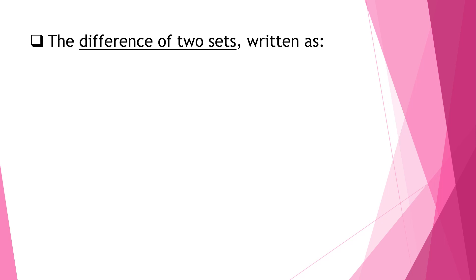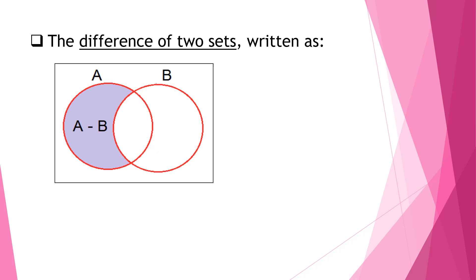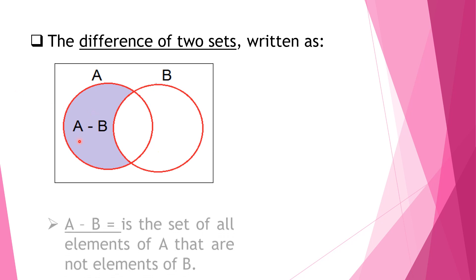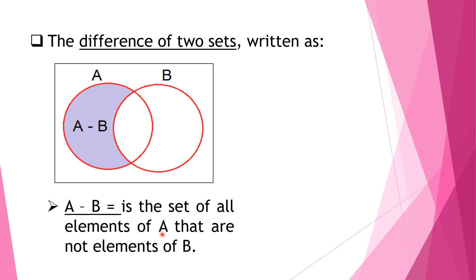Next is the difference of two sets. When we say the difference of two sets, it is written as A minus B. A minus B is the set of all elements of A that are not elements of B. As you can notice in our Venn diagram, instead of shading the whole circle of A, only the part of A that is not shared with B is shaded — that is the bigger part of A, because the smaller part of A is already covered by B.